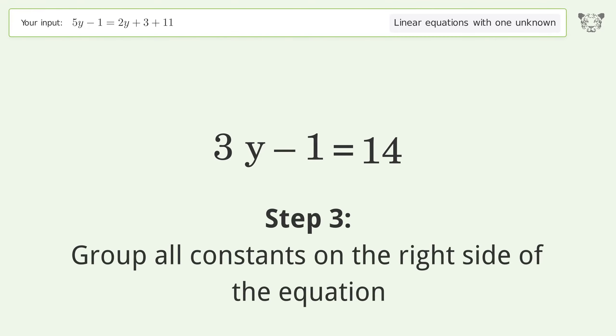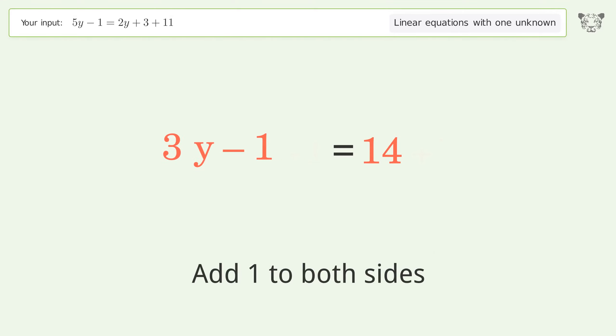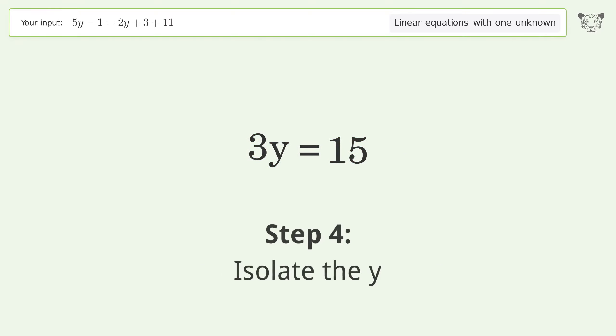Group all constants on the right side of the equation. Add 1 to both sides. Simplify the arithmetic and isolate the y.